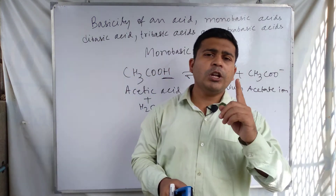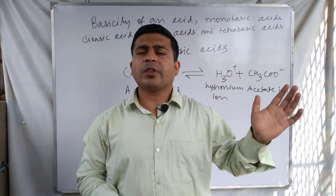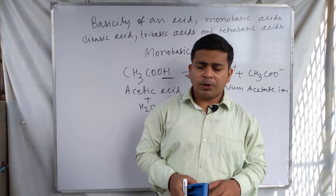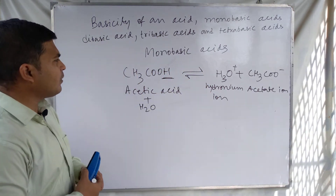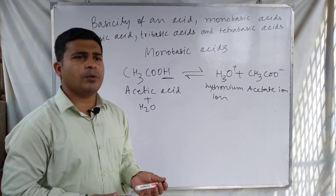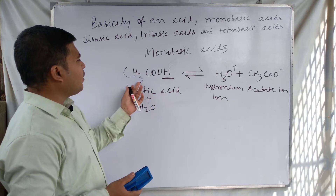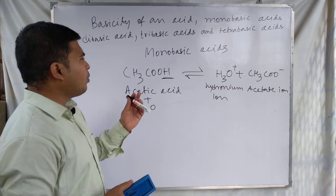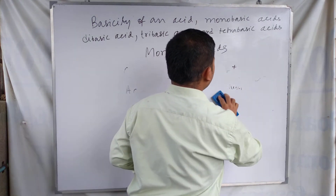Acetic acid behaves as a monobasic acid because one acetic acid molecule can give only one H⁺ ion in aqueous solution. It has four hydrogen atoms, but three hydrogen atoms are non-ionizable — only one hydrogen atom is ionizable. So it is called a monobasic acid. You have to remember that the number of ionizable hydrogen atoms represents the basicity of an acid, not the total number of hydrogen atoms.